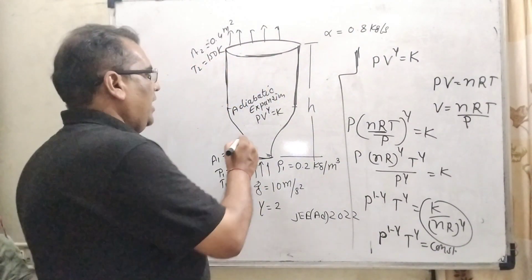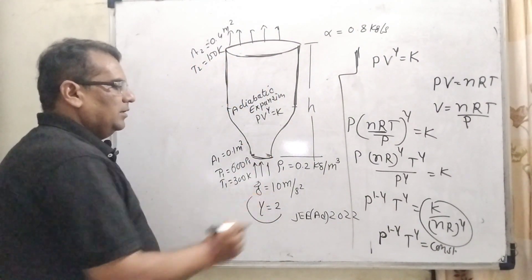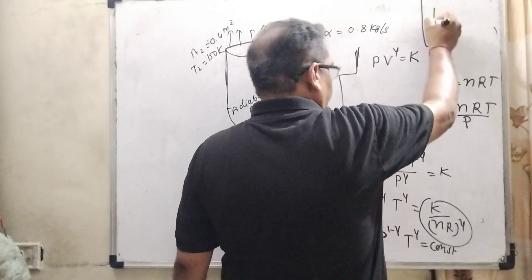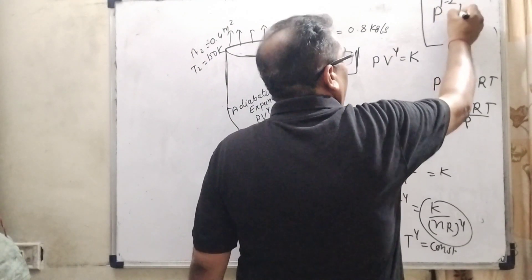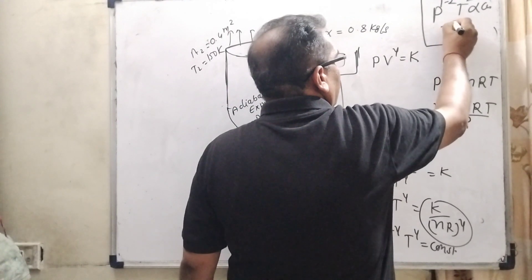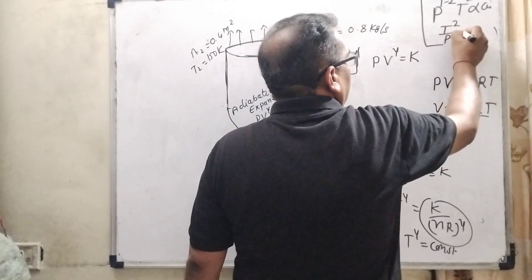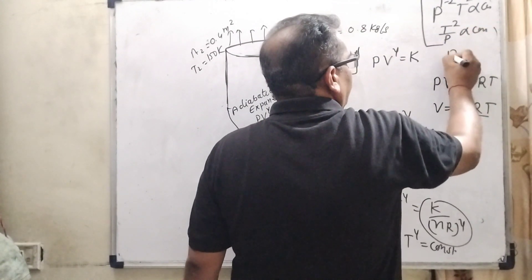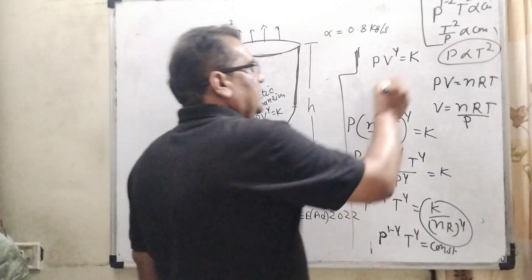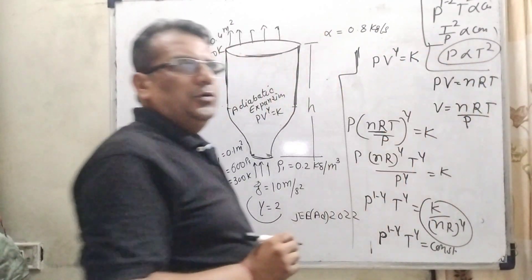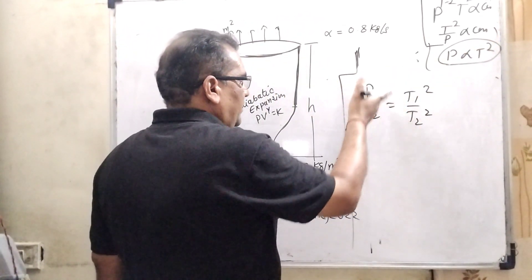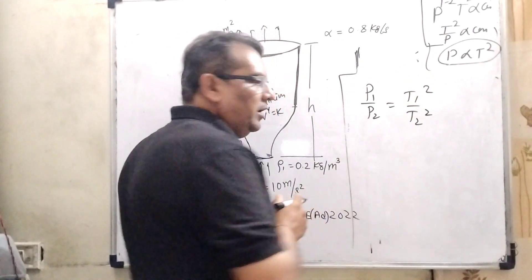With gamma equal to 2, we get P raised to power (1 minus 2) times T squared equals constant, which simplifies to T squared upon P equals constant. This means P is directly proportional to T squared. So we can write P1/P2 equal to T1 squared upon T2 squared.